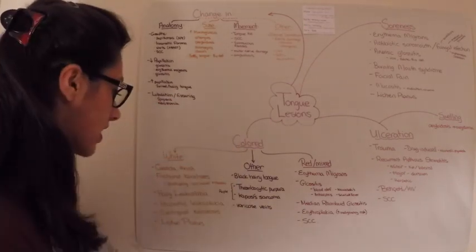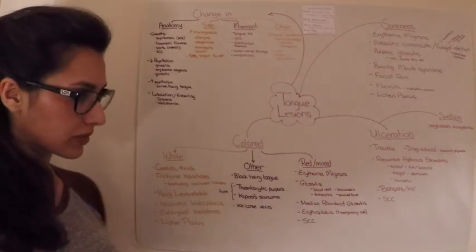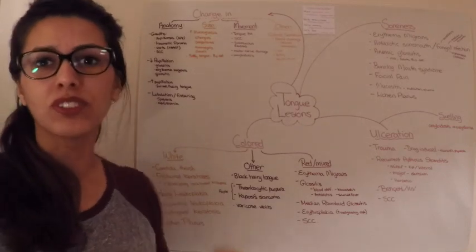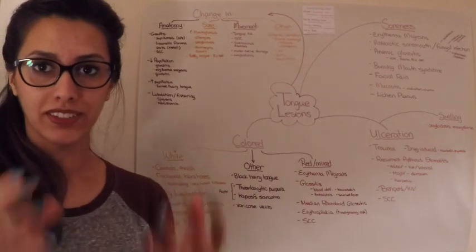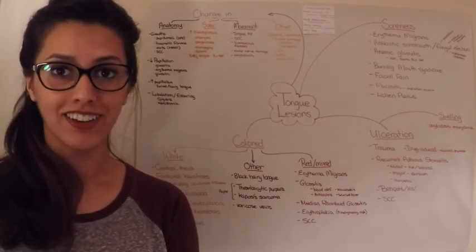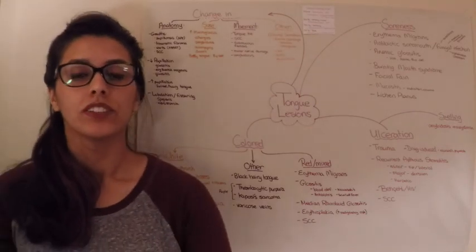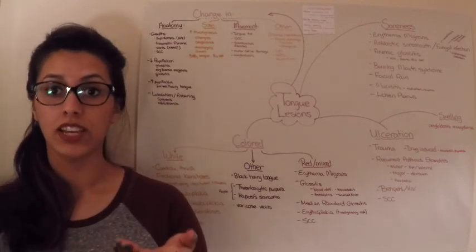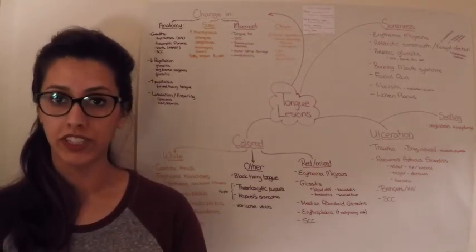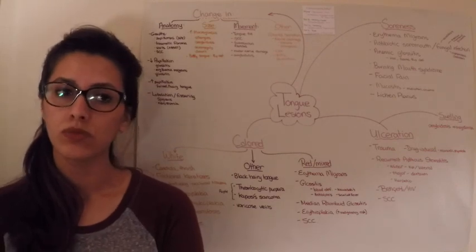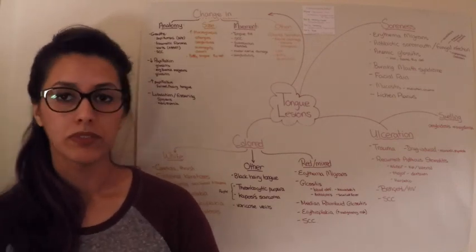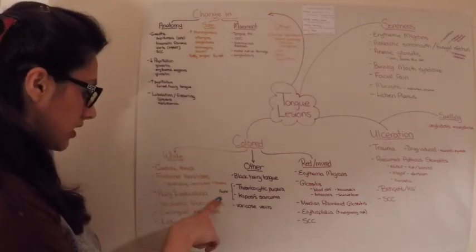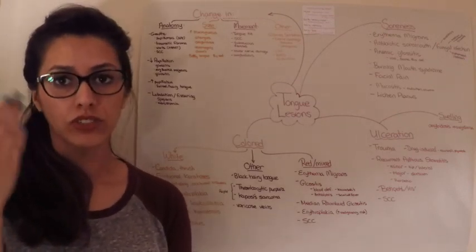Next one is hairy leukoplakia, so this is again a white lesion on the lateral border of the tongue. All of these are fitting into a differential diagnosis for white lesions on the tongue. Hairy leukoplakia is presented in patients with HIV when there's an increase in Epstein-Barr virus. So if you see a white lesion, always rule out HIV and potentially do the necessary tests, which is a CD4 count. It presents with vertical corrugations on the lateral border of the tongue.